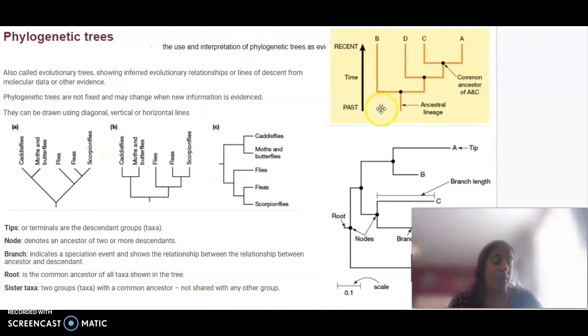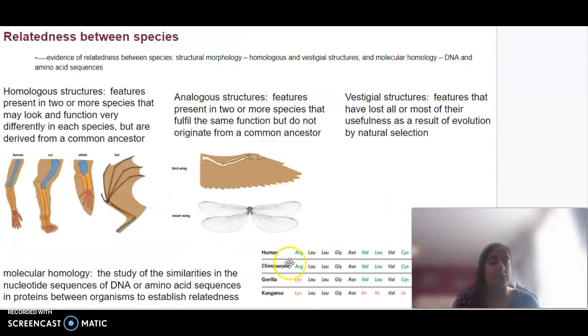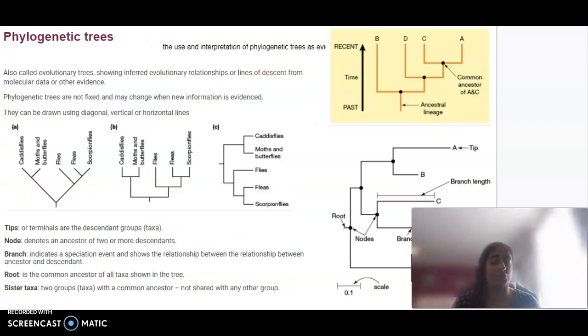You need to be able to interpret a phylogenetic tree when given one, or interpret molecular sequences of amino acids to determine which species are closely related and represent that as a phylogenetic tree.